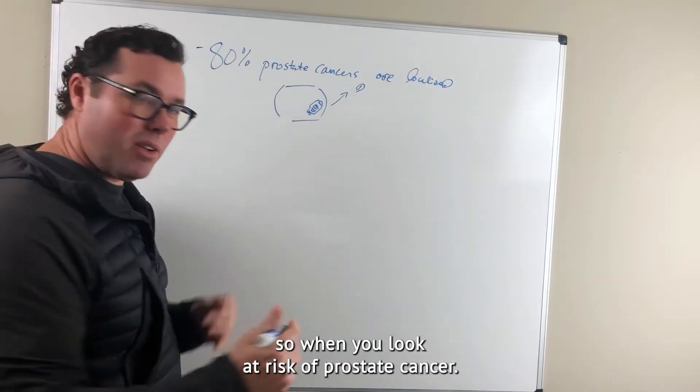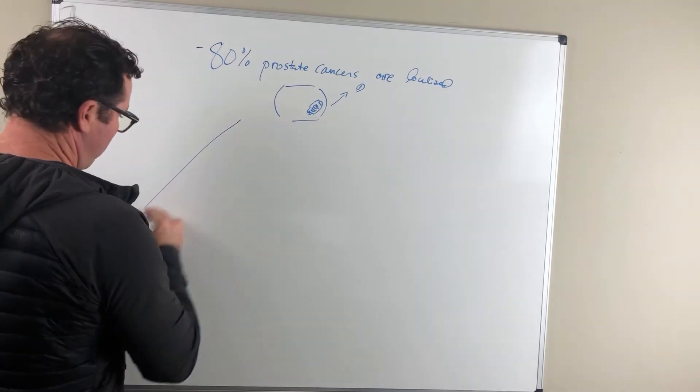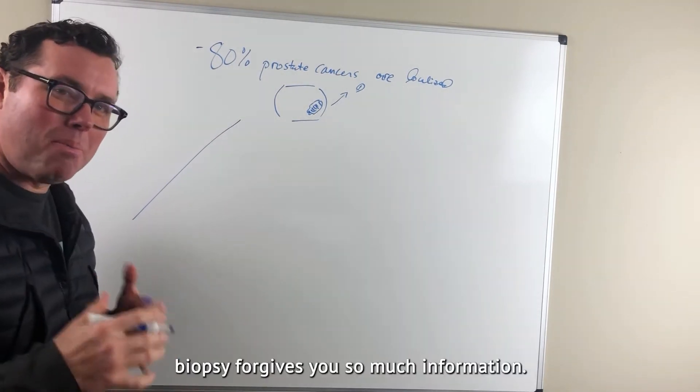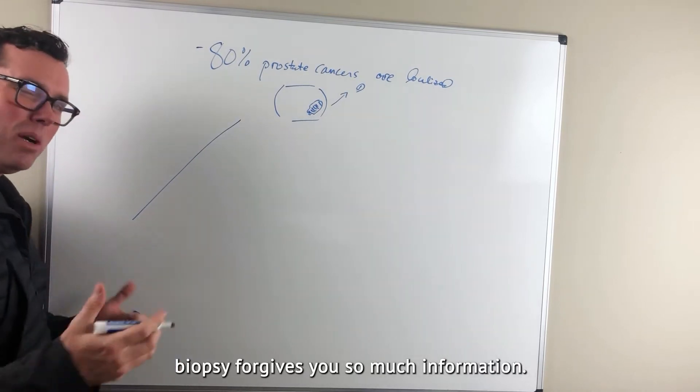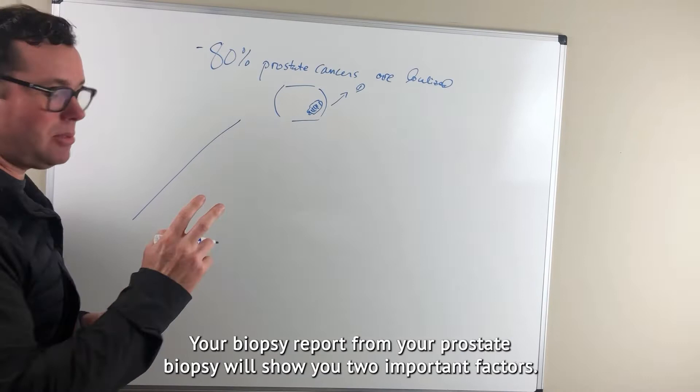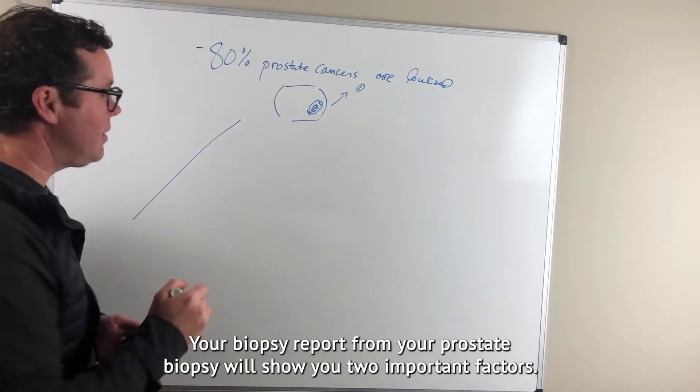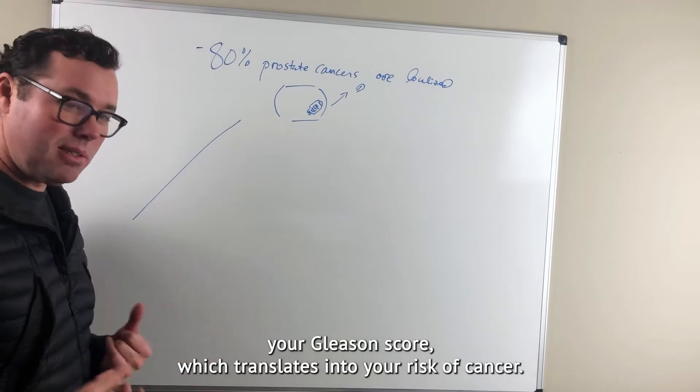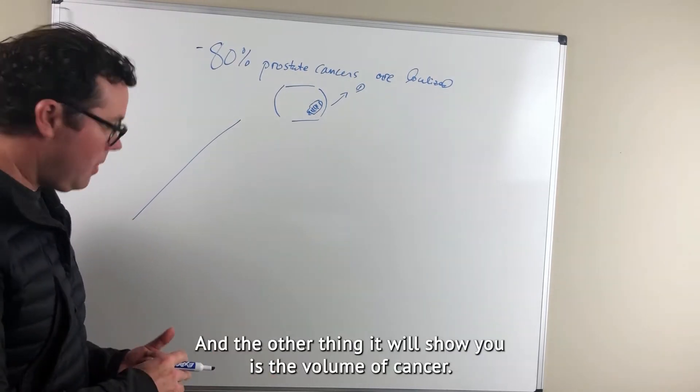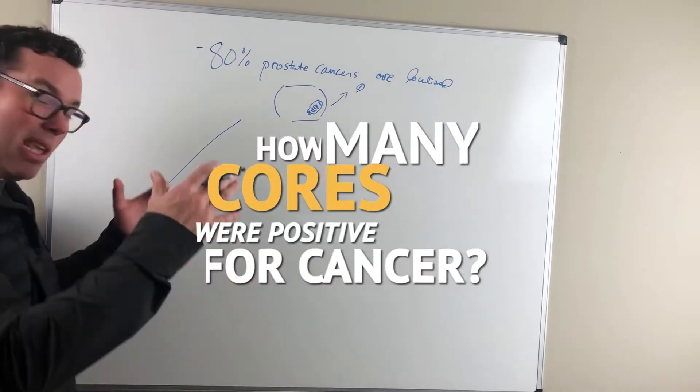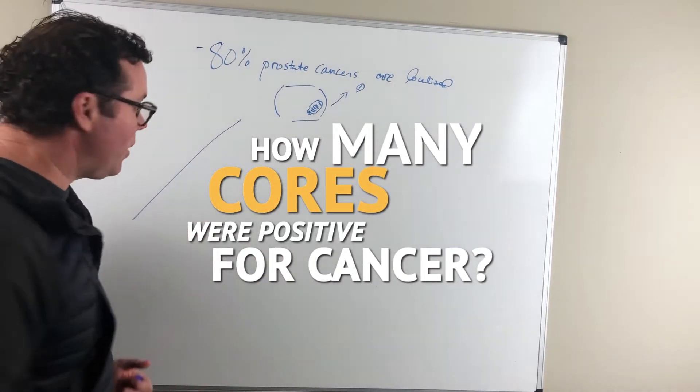When you look at risk of prostate cancer, just looking at your biopsy gives you so much information. Your biopsy report will show you two important factors. One is your Gleason score, which translates into your risk of cancer. And the other is the volume of cancer, or how many cores were positive for cancer.